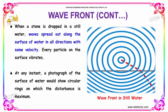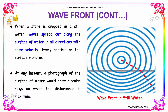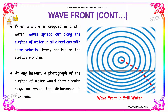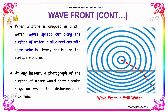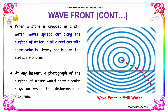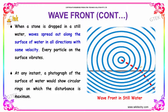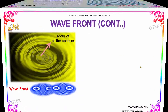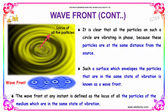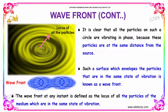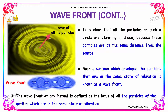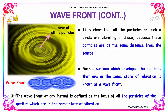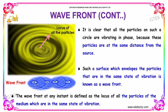When a stone is dropped in still water, waves spread out along the surface of water in all directions with the same velocity. Every particle on the surface vibrates. At any instant, a photograph of the surface of water would show circular rings on which the disturbance is maximum. The locus of such particles is referred to as the wavefront. All the particles on such a circle are vibrating in phase, because these particles are at the same distance from the source. Such a surface, which envelops the particles that are in the same state of vibration, is known as wavefront.